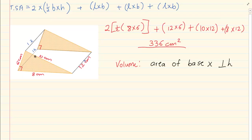But it is not the base you work with — we work with the triangle. Because number one, the triangles are congruent, and number two, they are 90 degrees to each other.